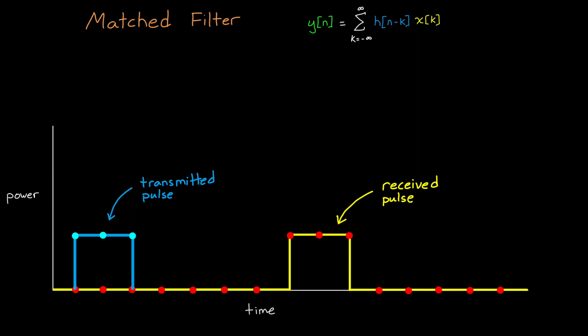Graphically, it looks like this. We flip the transmitted pulse in time, which is the exact same in this case since it has symmetry along this axis, and then we multiply it with the sampled received signal and sum the result.